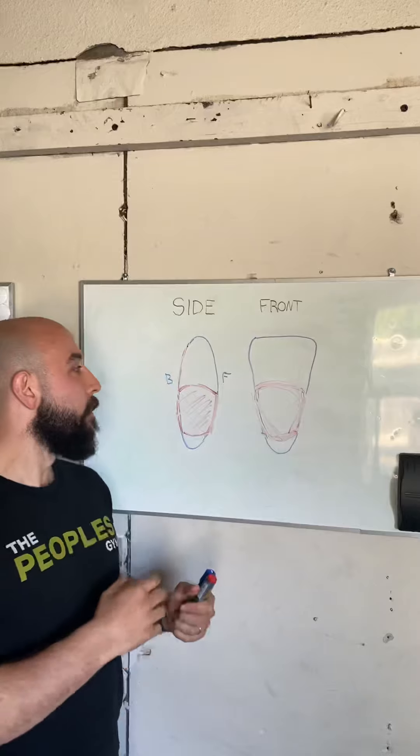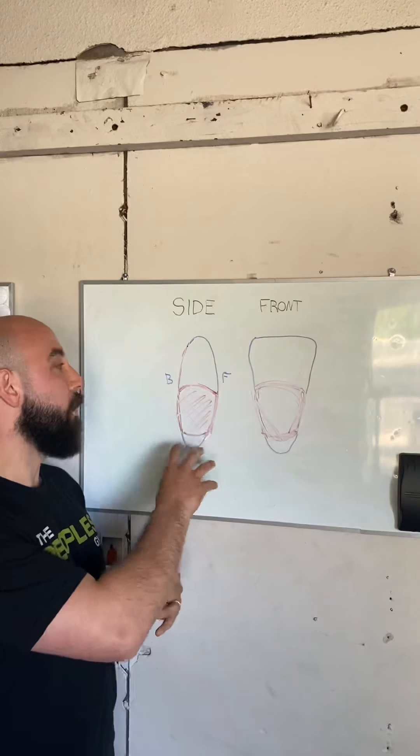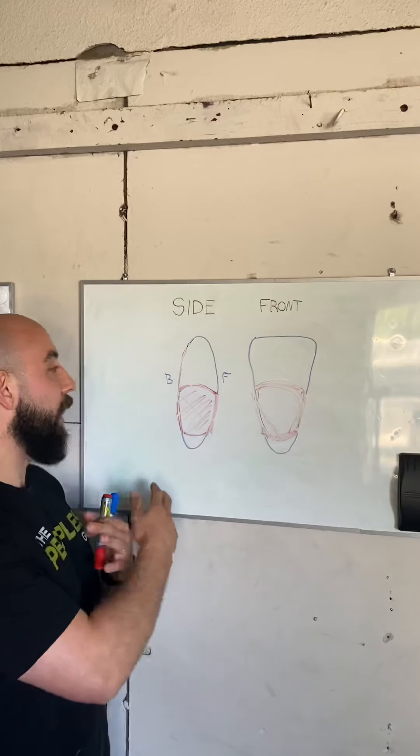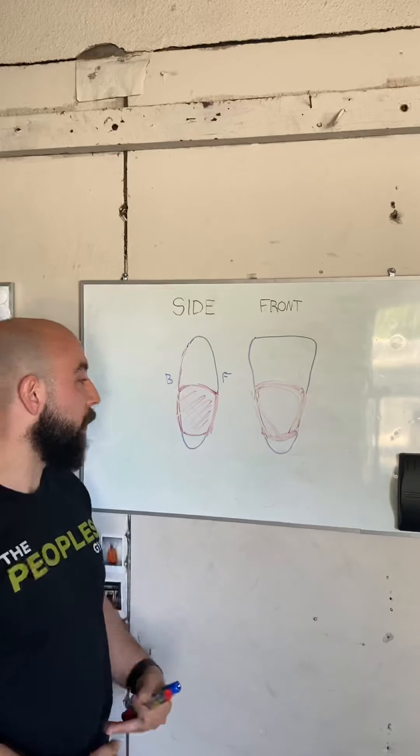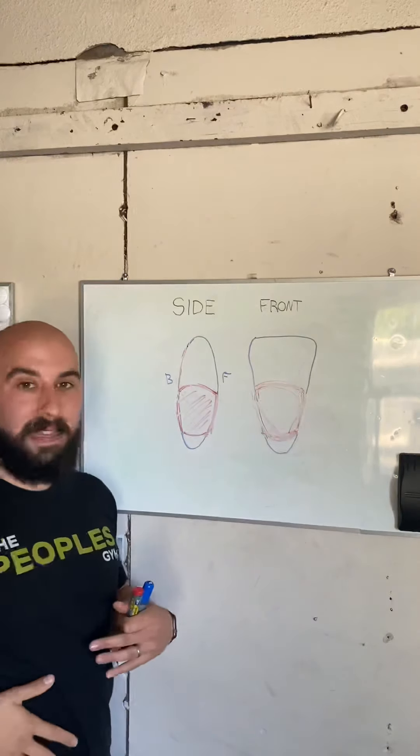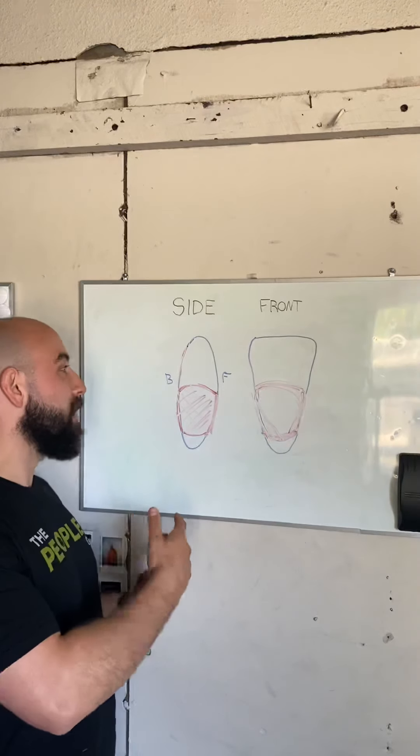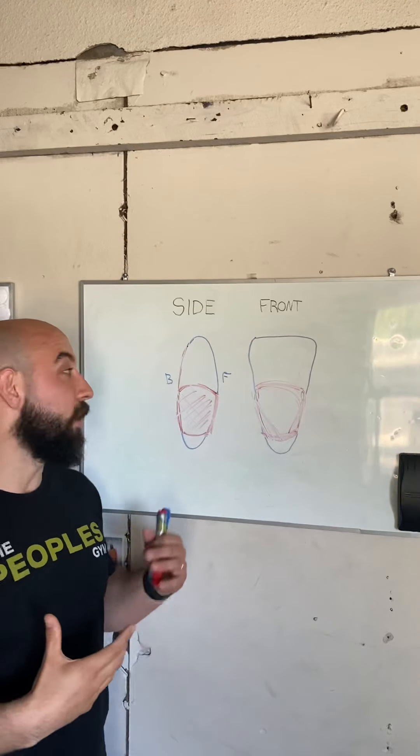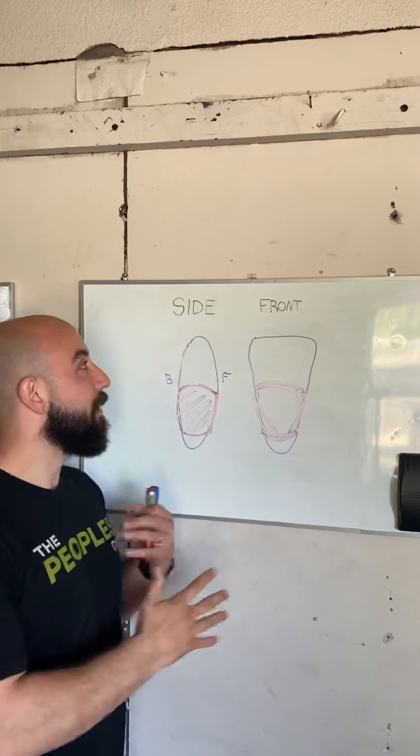Around that core and trunk area. So when we talk about core, that's kind of what we're looking at. We're looking at the abdominals, we're looking at the diaphragm, we're looking at the ability to breathe, we're looking at the pelvic floor, we're looking at the obliques and the ability to rotate and anti-rotate, and also looking at the back and the integrity around your spine.